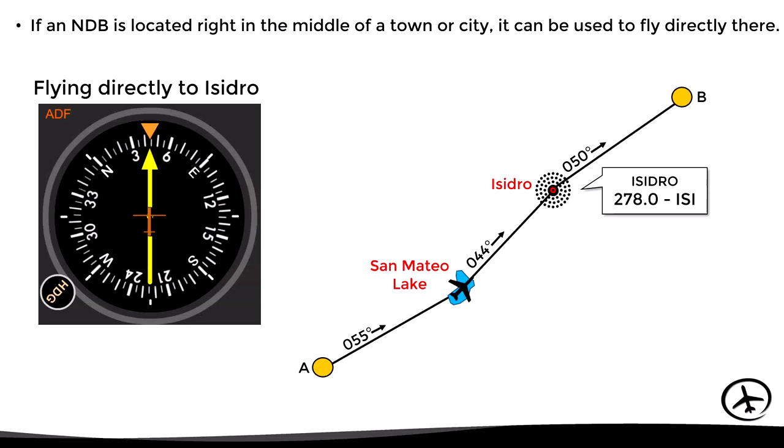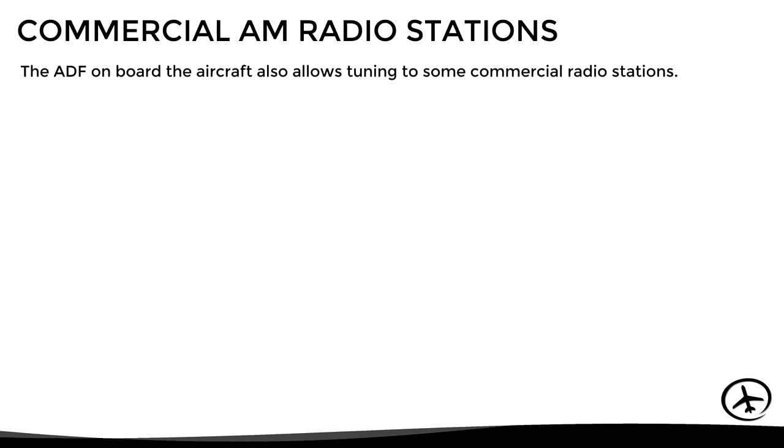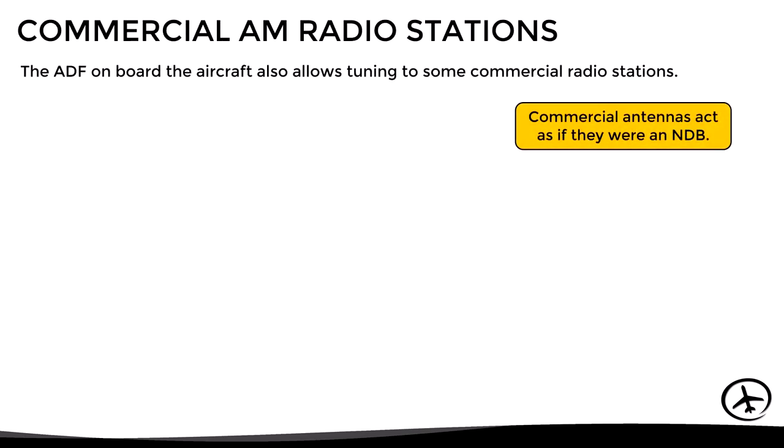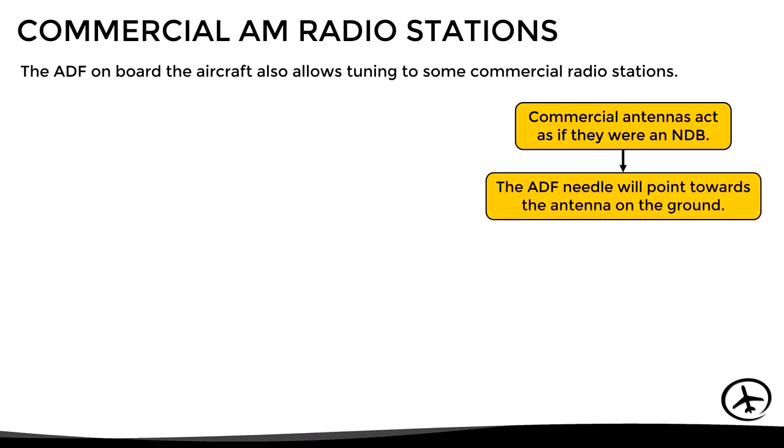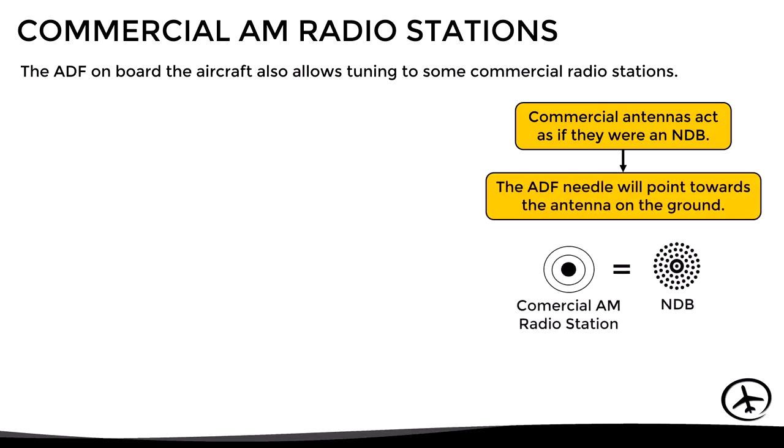Something important to know is that an ADF not only works with NDB signals, but also with signals emitted by any other radio station operating in that frequency band, such as commercial AM radio stations. In these cases, the antenna of the station will act as an NDB, and therefore the needle of the ADF will point towards the station on the ground.